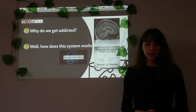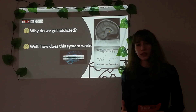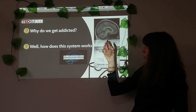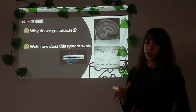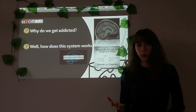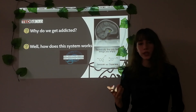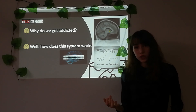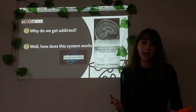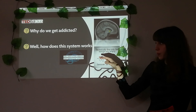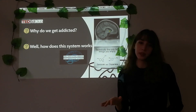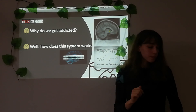Why do we get addicted? When you do something that makes you happy, the nucleus accumbens is stimulated and the amount of dopamine in your brain increases. Accordingly, you want to do it again. We call that the reward and punishment system.